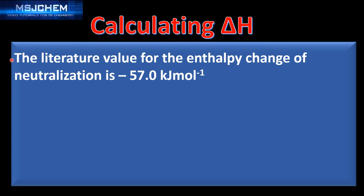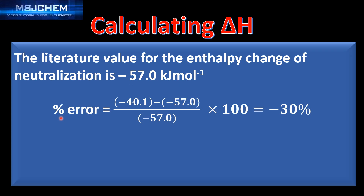The literature value for the enthalpy change of neutralization is around negative 57.0 kJ/mol. Calculating the percentage error — experimental value minus the theoretical value, divided by the theoretical value, multiplied by 100 — gives a percentage error of negative 30%. The negative sign tells us that our experimental value is less than the theoretical value.